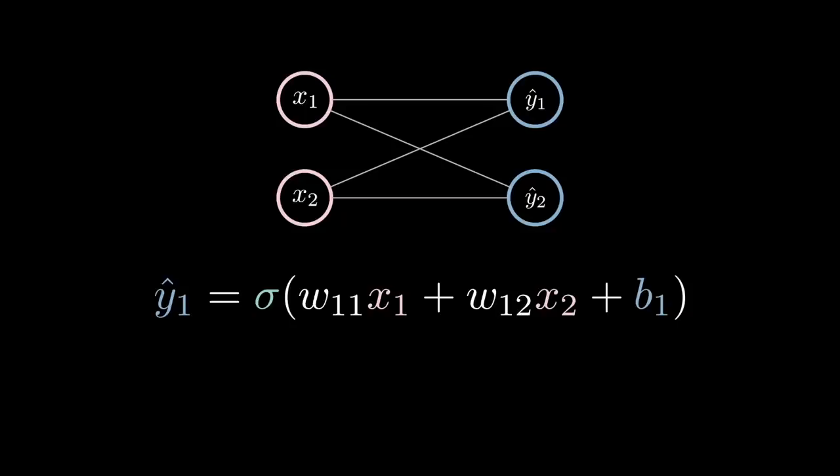Here, the first digit of the subscript of a weight signifies which neuron we're talking about and the second digit signifies which input the weight is being multiplied by. Similarly, we can do the same for the second output neuron, but using 2 as the first digit of the subscript.